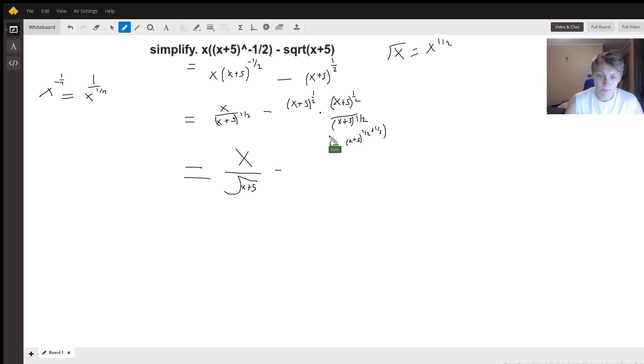All right, so this is basically just going to be square root of that times square root of that, divided by its own square root. So this is going to just be x plus 5 divided by – and then we have one more – root of x plus 5 in the bottom.